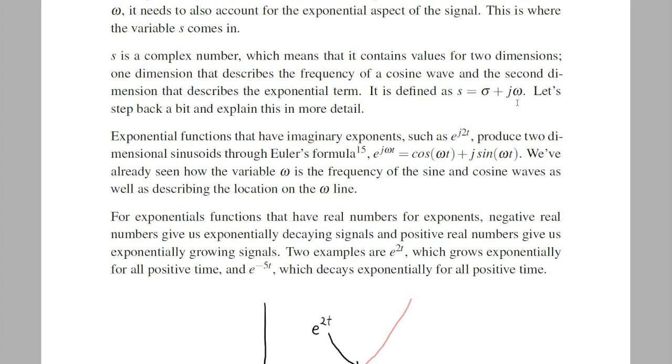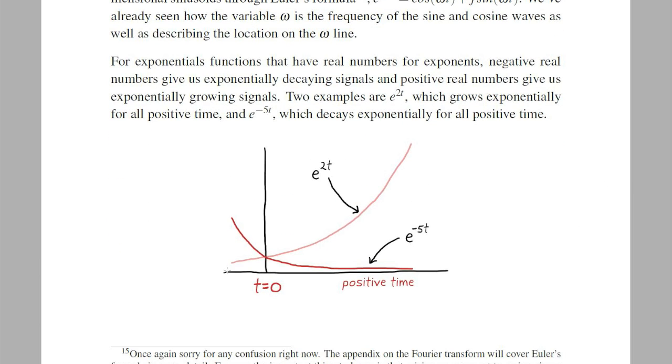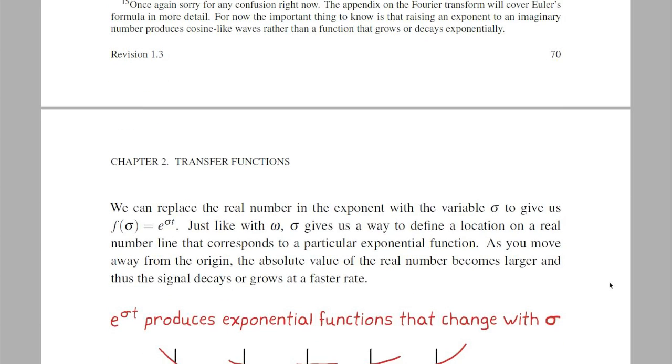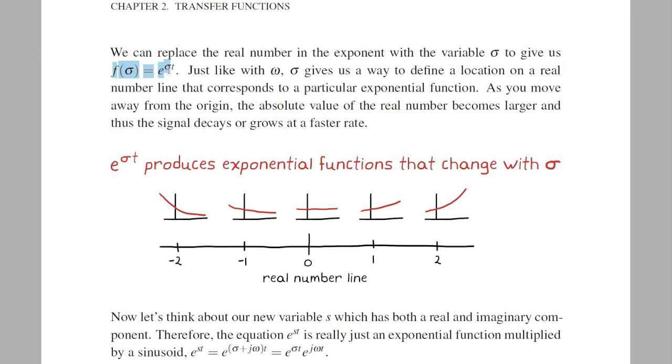Let's explain how that works. If you raise e to an imaginary number, the result is a complex function consisting of sine and cosine waves, which is described through Euler's formula. So raising e to the j omega portion of the s variable produces frequency signals. On the other hand, if you raise e to a real number, positive real numbers give us exponentially growing signals, and negative real numbers give us exponentially decaying signals. In this case, we can replace the coefficient of t in the exponent with the variable sigma, to get e to the sigma t.